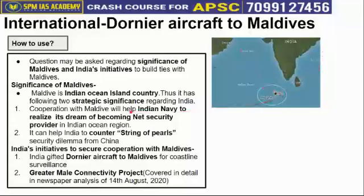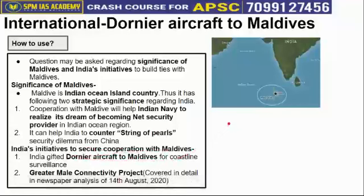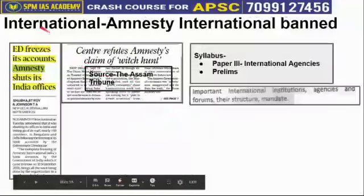If India cooperates well with Maldives, the Chinese security threat from the string of pearls can be countered and the security dilemma for India can be broken. These are some of the strategic significances of Maldives for India. As an example of initiatives: India gifted a Dornier aircraft to Maldives for coastline surveillance. Additionally, India is coming up with the Greater Malé Connectivity Project, which I covered in detail in my newspaper analysis of 14th August 2020. These are all initiatives India has taken with respect to Maldives to build good ties.